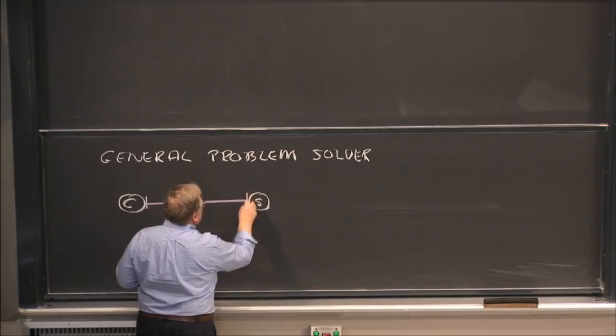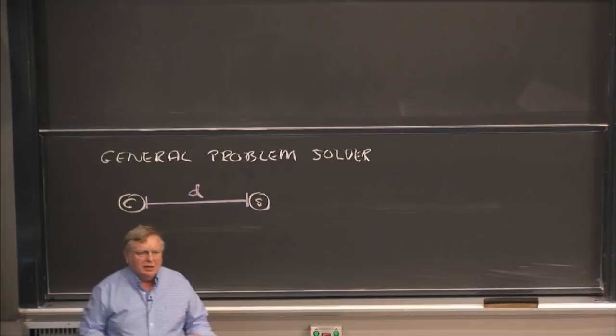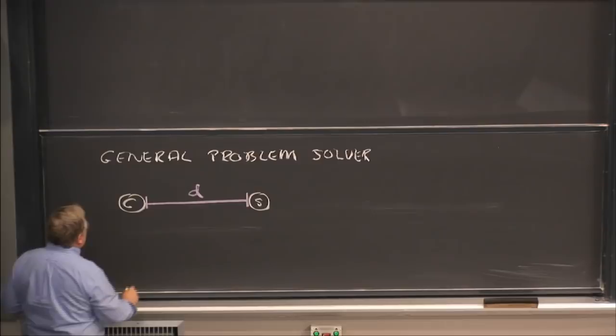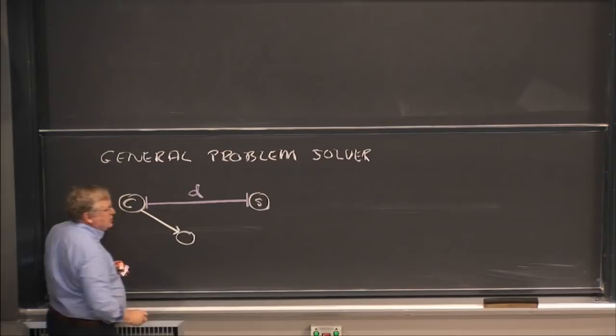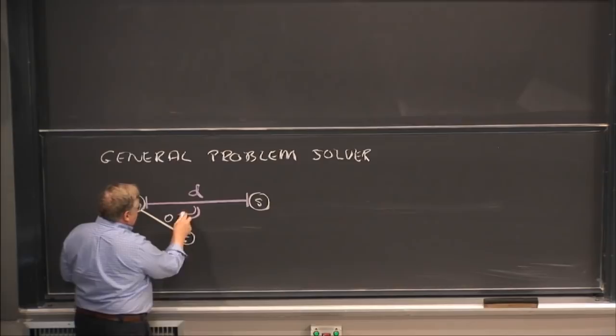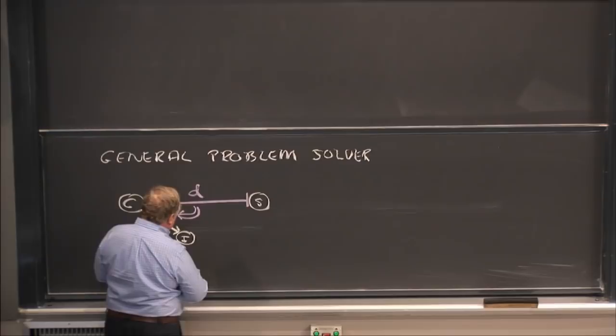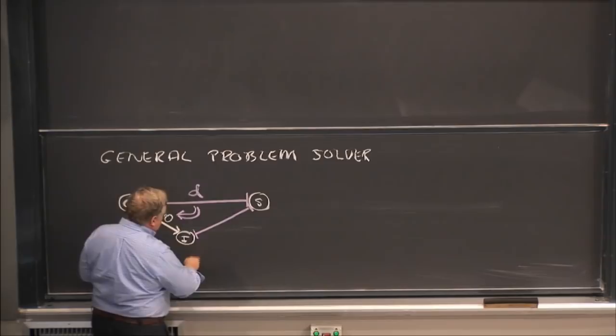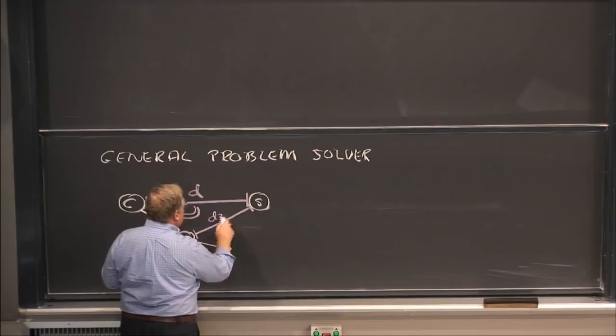So that's the difference, we'll call that difference D. And when you observe that difference, that's enough, they say, in this general approach to problem solving, for you to select some operation that will move you from your current state to some new state, an intermediate state. Call that I. So that operator O is determined by the difference D. And then, of course, the next thing to do is to measure the difference between that intermediate state and the state you want to be in, and choose some operator that's relevant to reducing that state. So we'll call that D2, and we'll call this O2. And D2 is what leads you to O2. And so it goes.